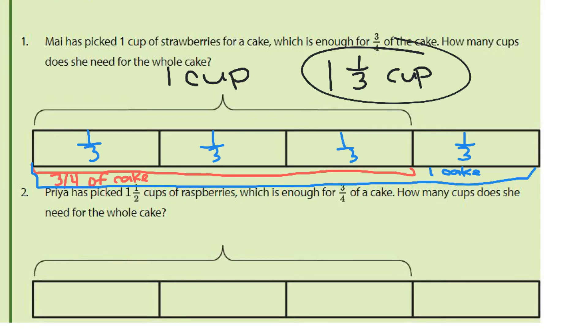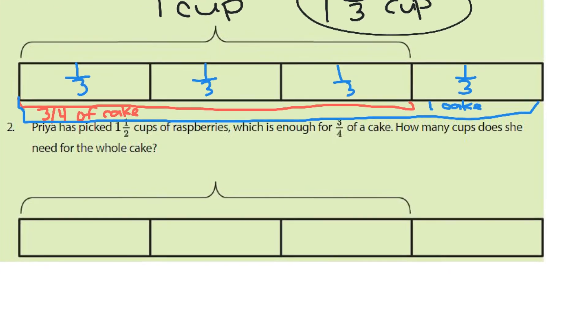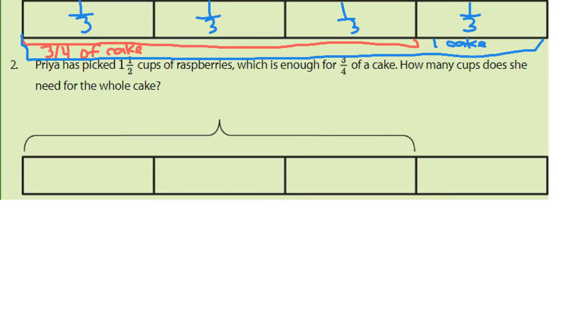If we look at question two, Priya has picked one and a half cups of raspberries, which is enough, again, for three-fourths of the cake. How many cups does she need for the entire cake?